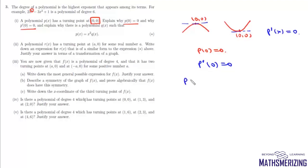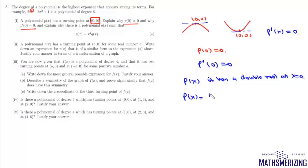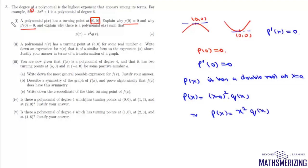Since p(0) = 0 and p'(0) = 0, this polynomial p(x) has a double root at x = 0. If x = 0 is a double root, we can write p(x) as (x - 0)² times another polynomial q(x), giving us p(x) = x²·q(x), which is what we need to prove in this first part.